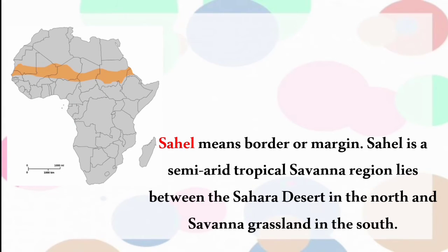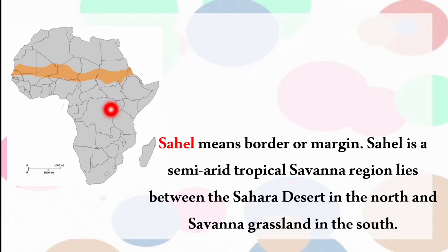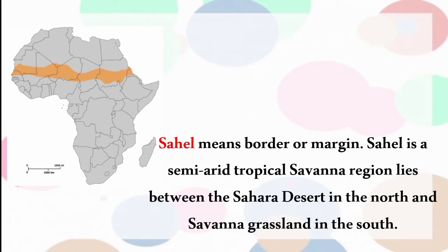The second physical division is Sahel, which means 'border' or 'margin'. Sahel is a semi-arid tropical savannah region that lies between the Sahara Desert in the north and the savannah grassland in the south.